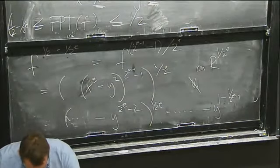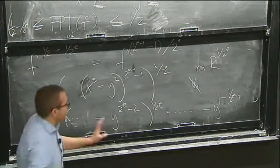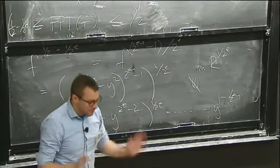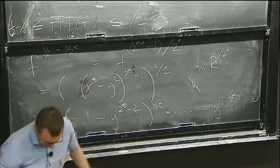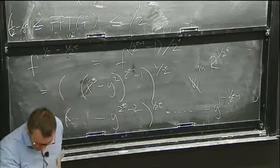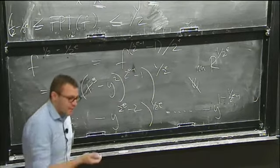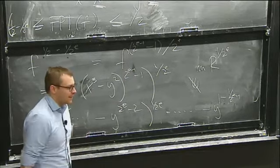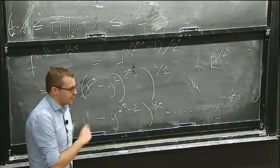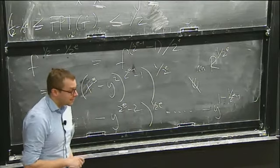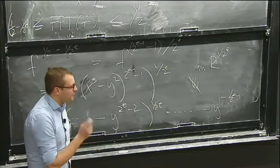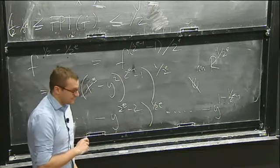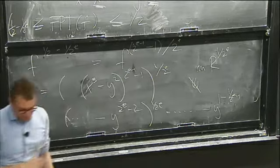Let's finish with the cusp. Did you know it has another name? If you look it up on Wikipedia, it's called Neil's Semicubical Parabola. It was rectified by William Neil in 1657.